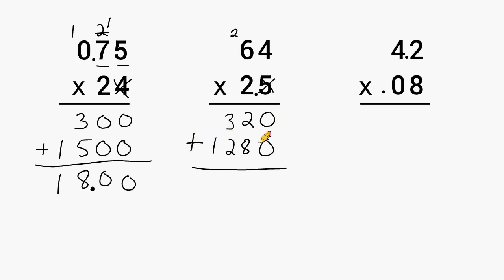We have 0 in this column. We have 10 in this column. We have 6 in this column. And 1 in this column. And in our problem, we have one decimal point and only one place value after that decimal, which means our decimal should be placed right here in our answer. So 64 times 2.5 is 160.